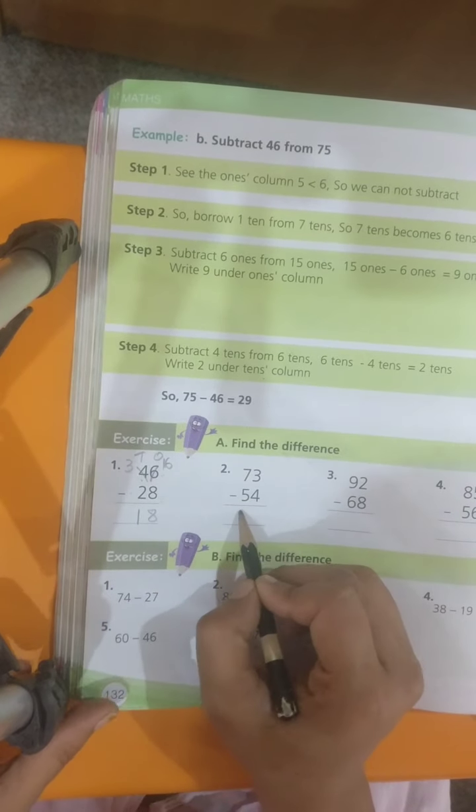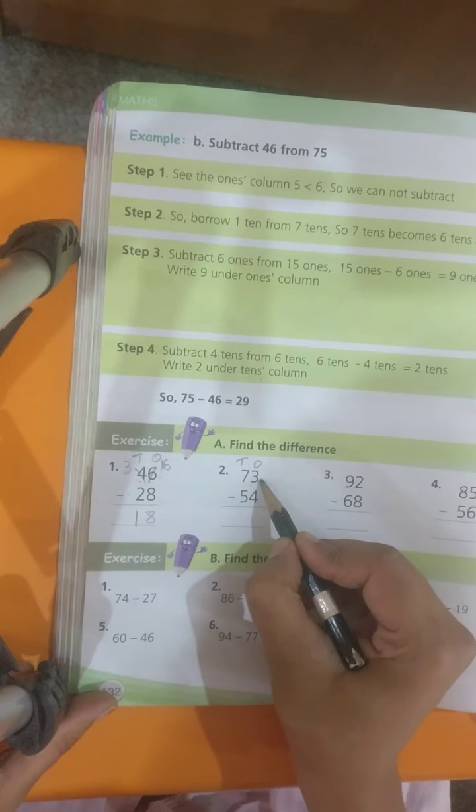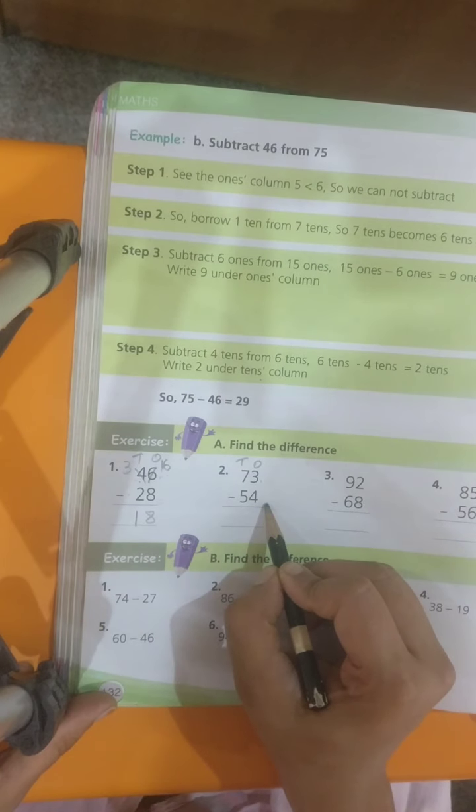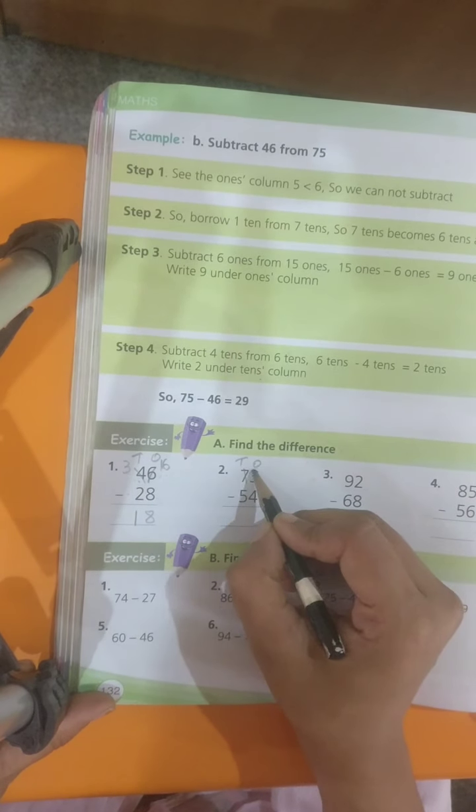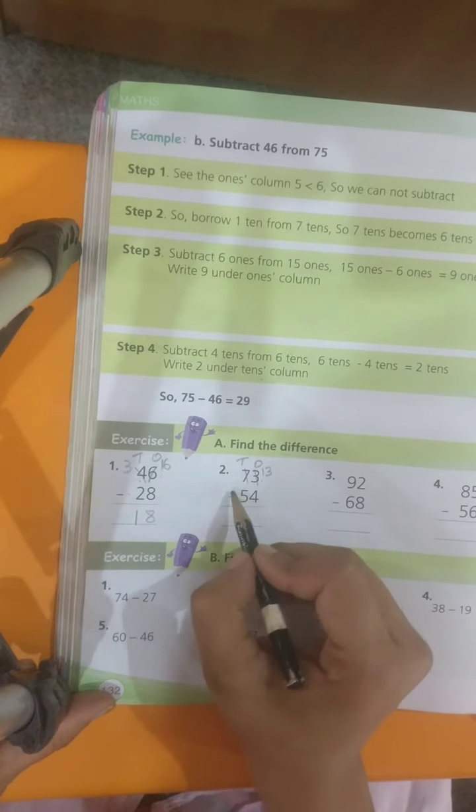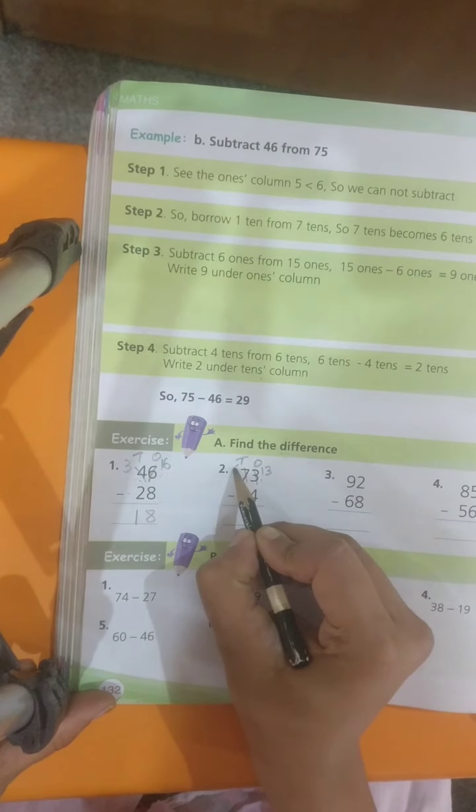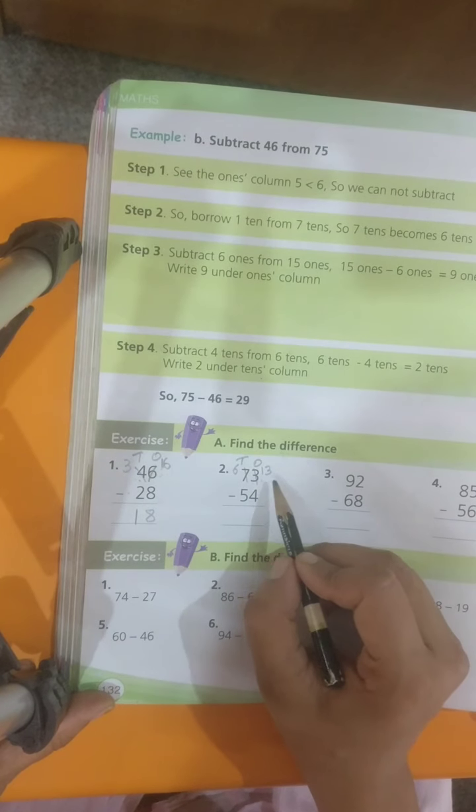Let's do second one also. You have 1's place, 10's place. A small number on the top, big number on the bottom. We have to borrow. 7 will give 1 to 3. So, 3 becomes 13. 7 becomes 6.